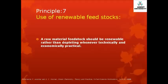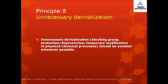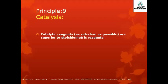Principle 7 tells about the use of renewable feedstocks. A raw material or feedstock should be renewable rather than depleting, whenever technically and economically practicable. Principle 8 talks about unnecessary derivatization — that is, using blocking groups, protection/deprotection, and temporary modification of physical or chemical properties — which should be avoided whenever possible.